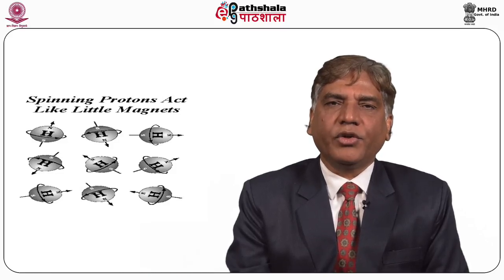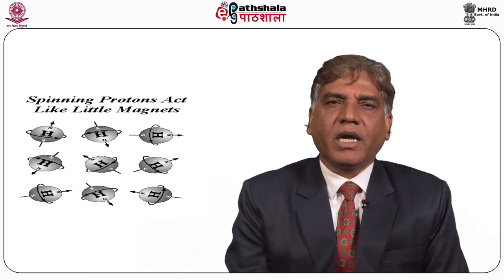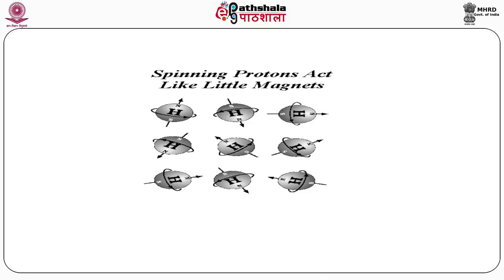In MRI, it is assumed that the patient is placed along a z-axis and an external magnetic field is applied along the patient. In the absence of any magnetic field, hydrogen nuclei are randomly oriented in the patient's body, so there is no magnetization present in the sample and therefore net magnetization is zero. This means tissues are not magnetized in the absence of any magnetic field.